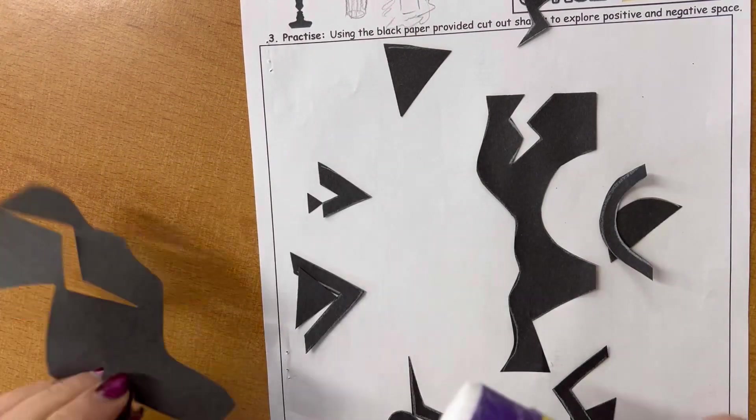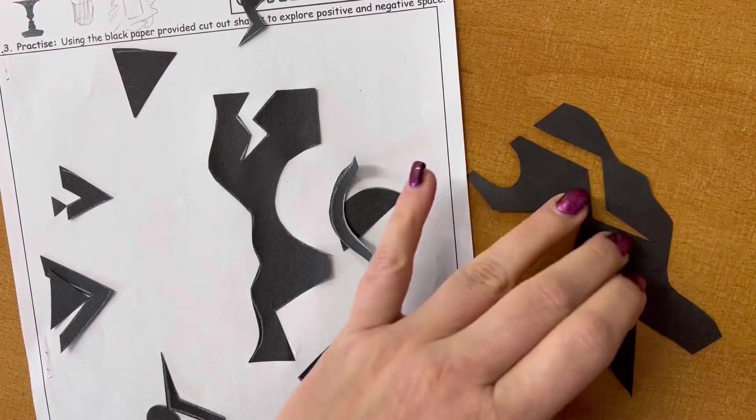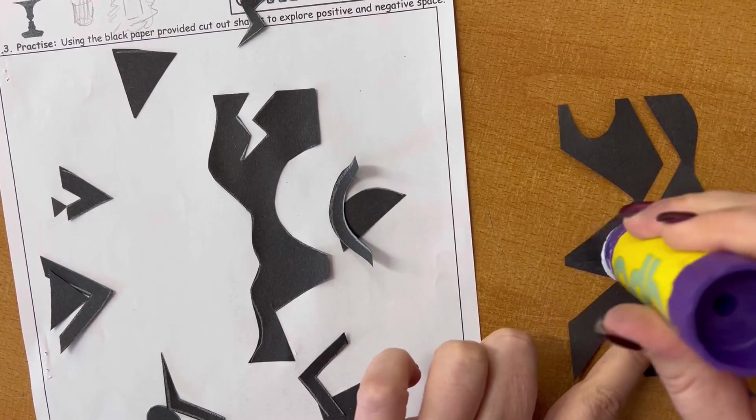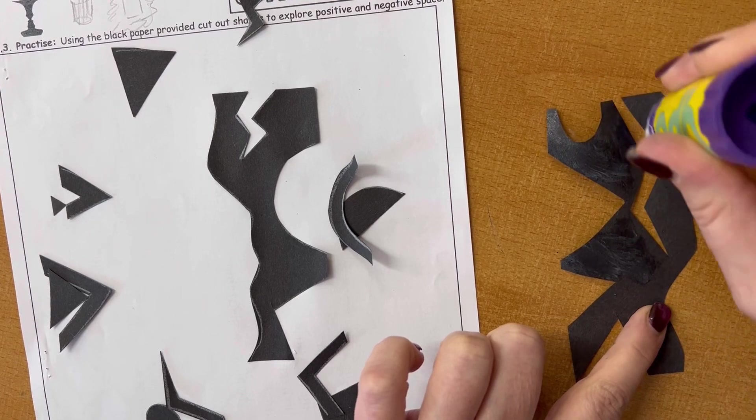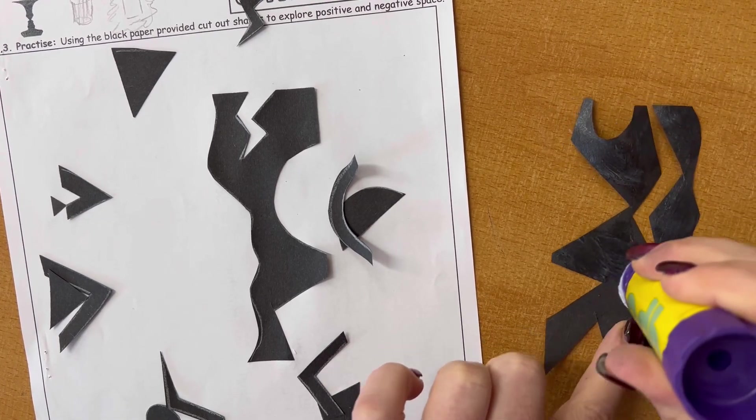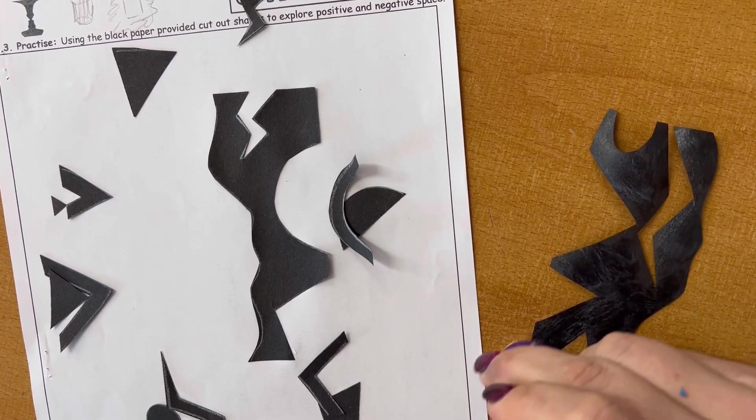And then the next big shape, so again, turned it upside down. Now I'm gluing on the table rather than on my paper, because that's going to allow me to drop more glue on this.